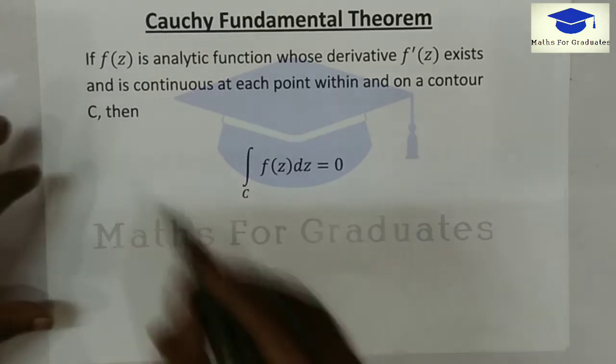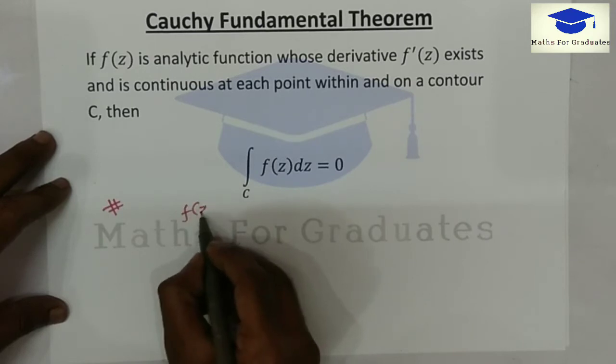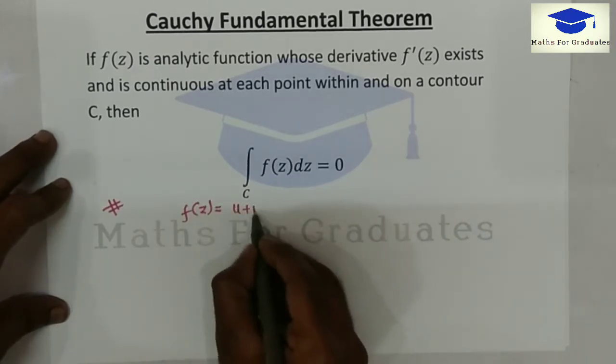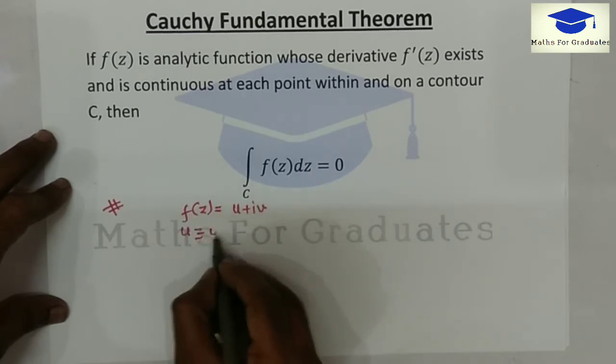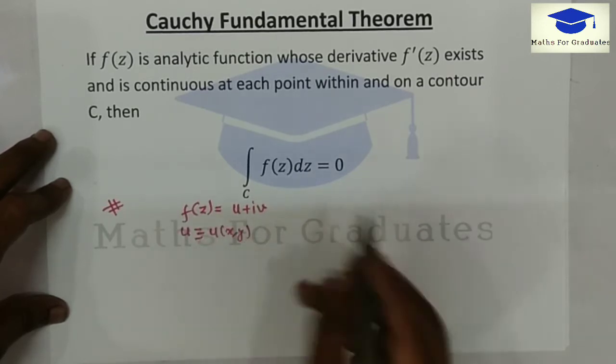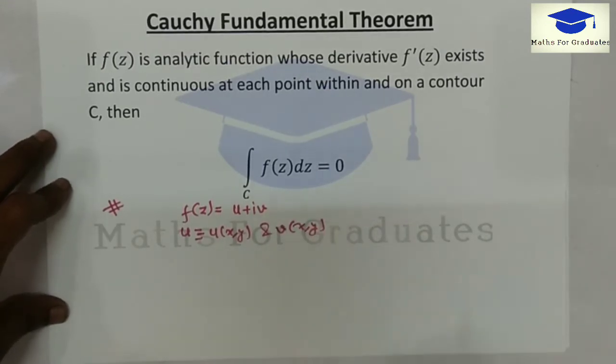Let's prove this theorem. We have a function f of z, say it is u plus i times v, where u is a function of x and y and v is also function of x and y.